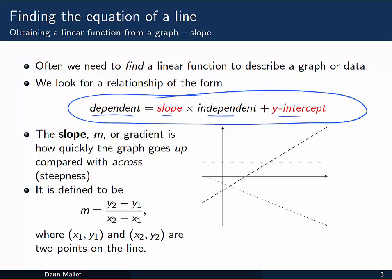Now the slope, often represented by the letter m, or gradient, is how quickly the graph goes up or down as you move from left to right, compared with how quickly we're moving across. And it's usually defined in terms of an equation that looks something like this. You might have also seen delta y over delta x, or the change in y over the change in x.